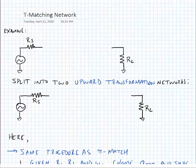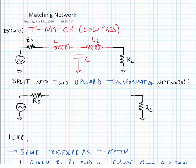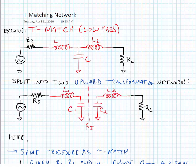Next we're going to look at the T matching network in a low-pass configuration. This is a low-pass configuration because we have inductors in series between the source impedance and the load impedance, and it looks like the letter T. Similar to the pi matching network, we're going to split this into two upward transformation networks. The intermediate resistance RI is greater than both the source resistance and the load resistance.